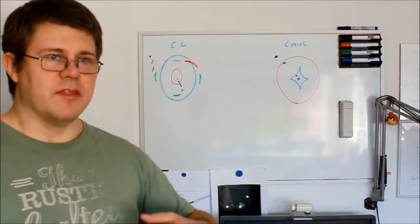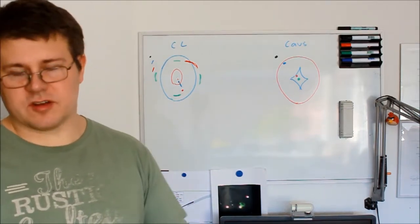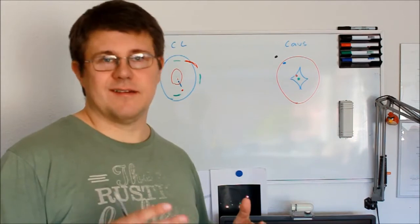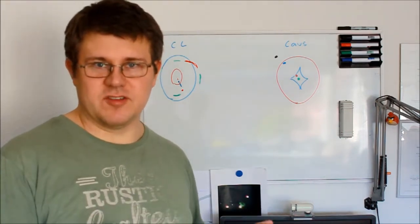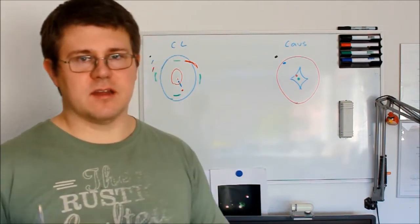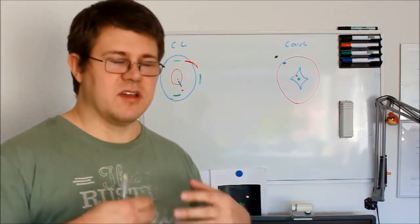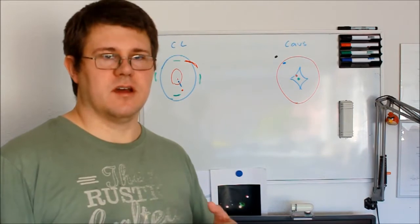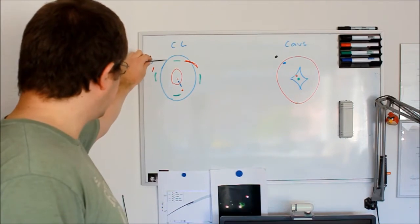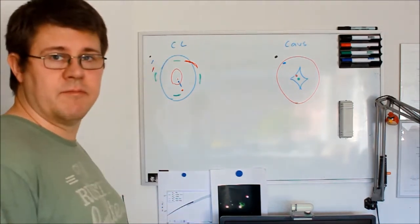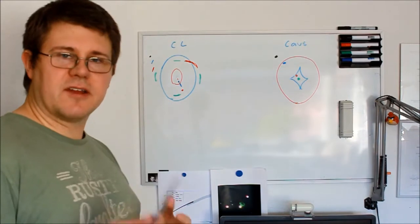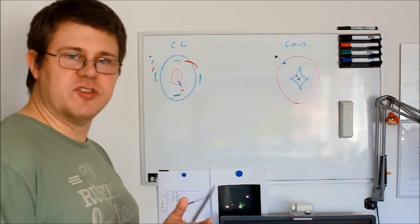Critical lines come from the gravitational potential, which comes from the distribution of mass. When we model our lens, we model the gravitational potential and from that get the mass, but they are interconnected. From the mass we can get the gravitational potential, and from that we can get the critical lines. As you can see here, there are an outer critical line and an inner critical line, and as the color-coded dots suggest, they are connected to the way the images are formed.